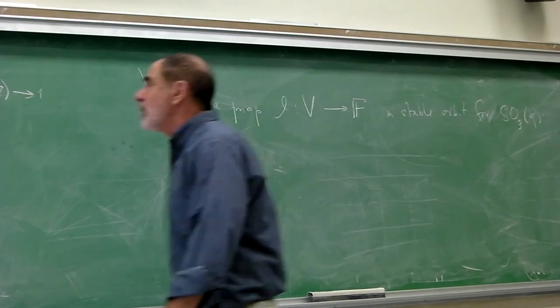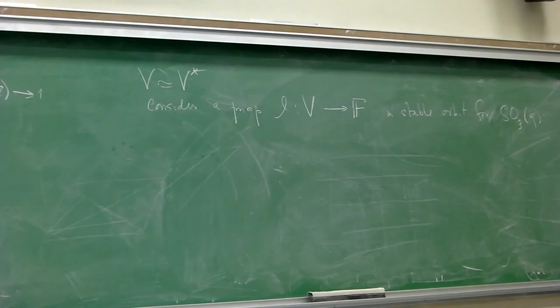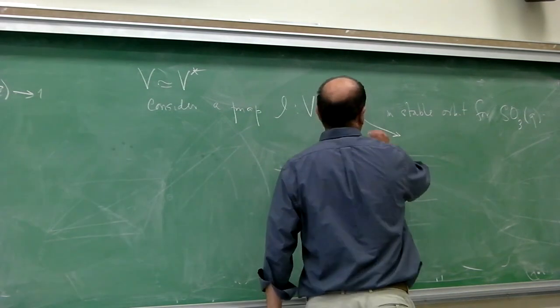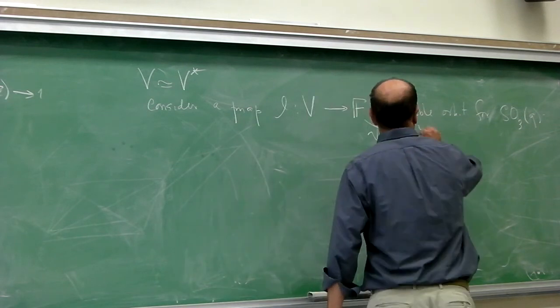So consider a map L from V to F in a stable orbit for SO3 cubed. Because linear forms and vectors are the same thing. Well, such a map would give a character of the subgroup of K reducing to the identity. So compose this with a character of the complex numbers, non-trivial.